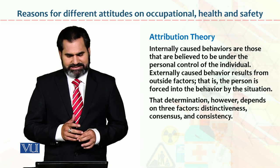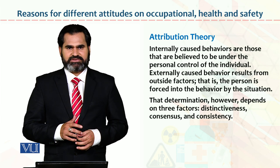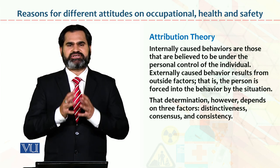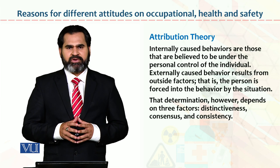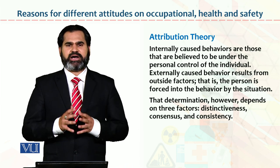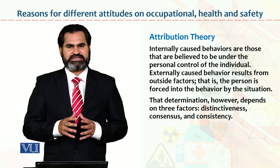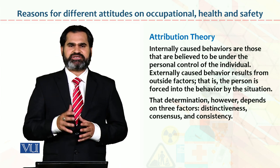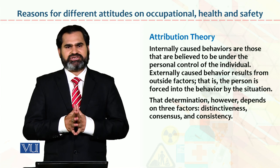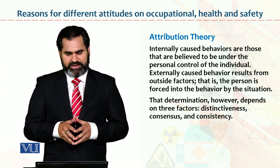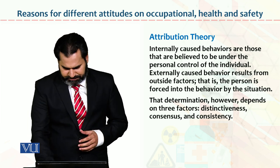Consensus refers to how you reach a decision — some people are individual decision makers, while others consult 2, 4, or 5 people before deciding, reaching consensus. Consistency means whether you are consistent in your behavior — once you make a decision, are you standing by it? And distinctiveness means whether your decision is unique compared to others. So these are all the components of attribution theory.